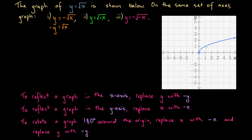So if we reflect the blue graph down across the x-axis, it looks like we're going to have a graph that curves down something like that. What about y equals the square root of minus x? This green function differs from the blue function in that we've replaced x with minus x. The second rule says to reflect a graph in the y-axis, replace x with minus x. So we're predicting this green graph will look the same as the blue graph, reflected in the y-axis — something like this. The origin point is included for both the orange and green graphs.